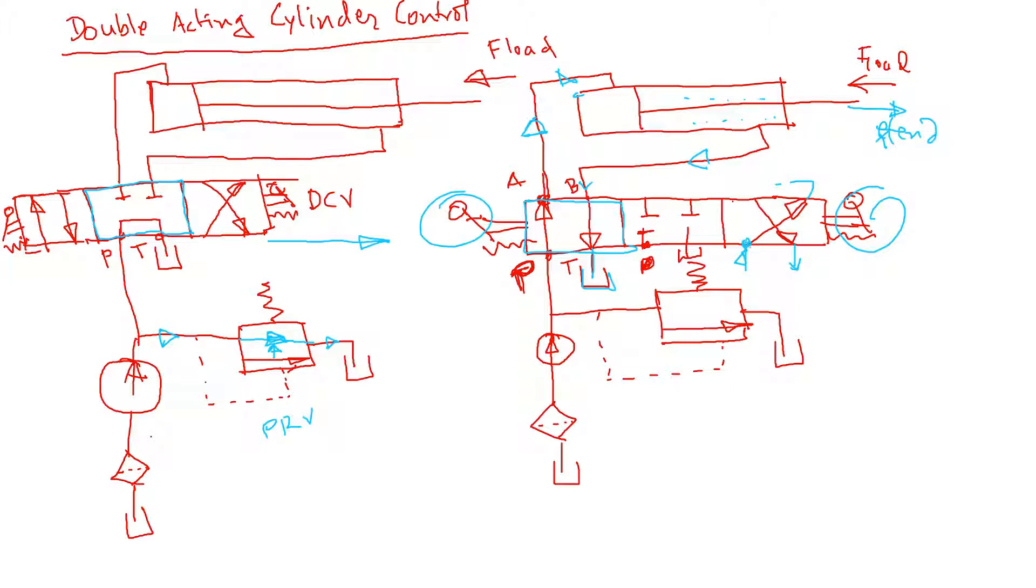You can see the pump port, and here we can see this is the pump port, and this is the tank or reservoir. This port is typically called port A, and this one is called B. You can switch between A and B, but besides the pump and tank, the other two are called A and B.